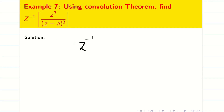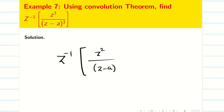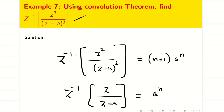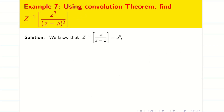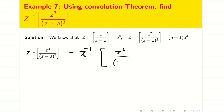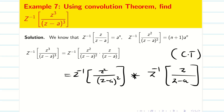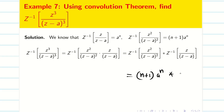Next problem: using the convolution theorem, find z-inverse of z³/(z−a)³. We just found that z-inverse of z²/(z−a)² = (n+1)·aⁿ, and z-inverse of z/(z−a) = aⁿ. We can write z³/(z−a)³ as [z²/(z−a)²] · [z/(z−a)]. Using the convolution theorem this becomes z-inverse of z²/(z−a)² star z-inverse of z/(z−a), which is (n+1)·aⁿ * aⁿ.